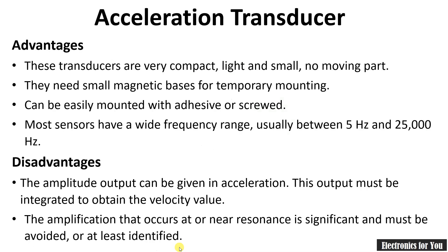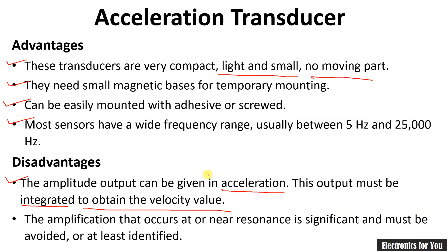Advantages of the acceleration transducer: these transducers are very compact, light, and small with no moving parts. They need only a small magnetic base for temporary mounting and can be easily mounted with adhesive or screwed in place. Most sensors have a wide frequency range, usually between 5 hertz and 25 kilohertz. Disadvantages: the amplitude voltage output is given in acceleration units, which must be integrated to obtain the velocity value. The amplification that occurs at or near resonance is significant and must be avoided or at least identified.